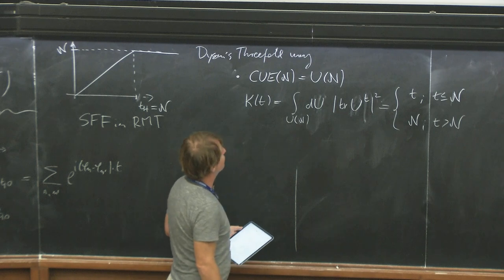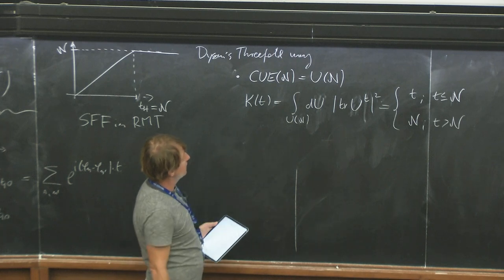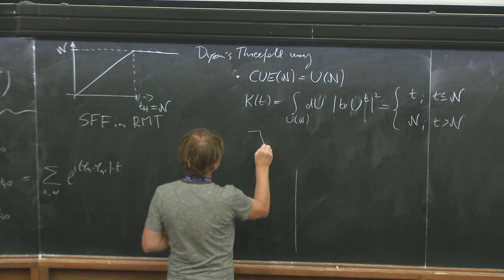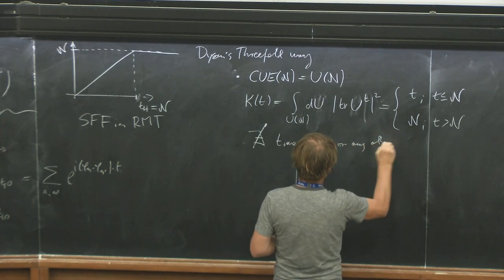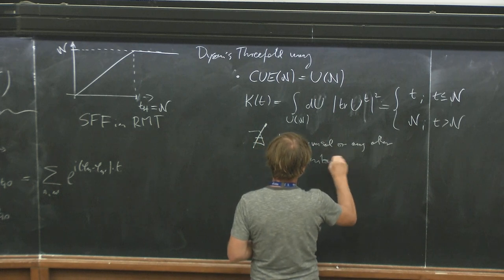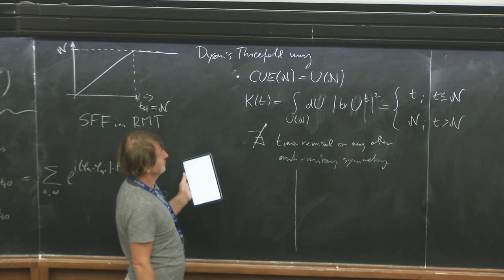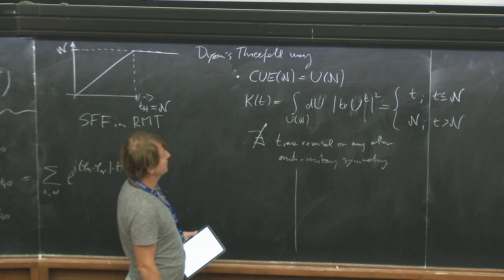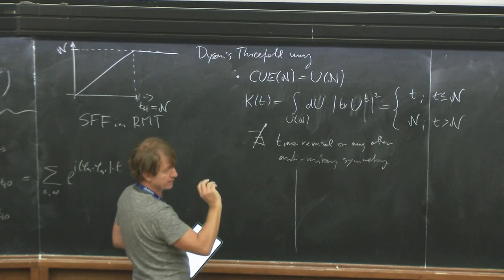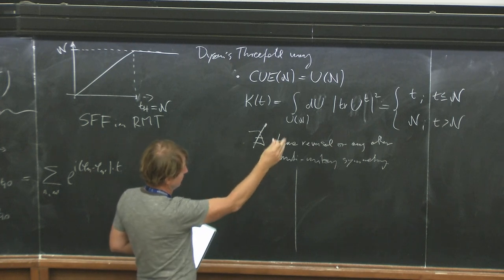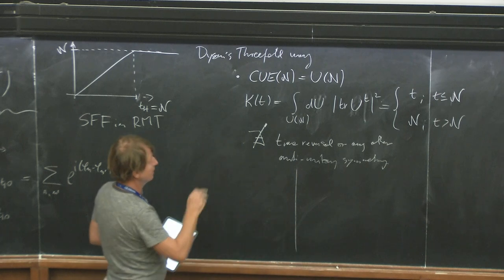You use the unitary ensemble for systems where there is no time reversal symmetry — no anti-unitary symmetry. When there is no time reversal in your chaotic model, the common wisdom is to use the unitary ensemble, either CUE or, in the Hamiltonian case, GUE. The spectral form factor is the same for circular and Gaussian ensembles. For Gaussian ensembles, time is continuous so there are some corrections, but in the thermodynamic limit it's the same.